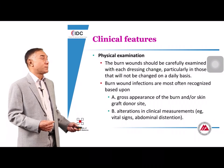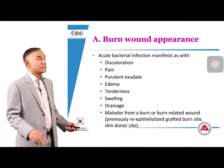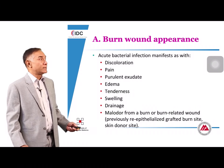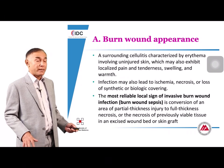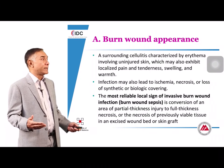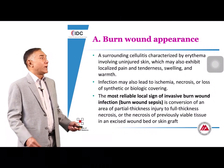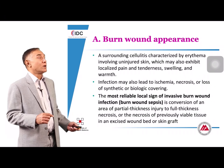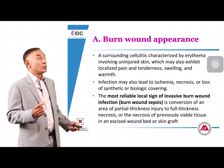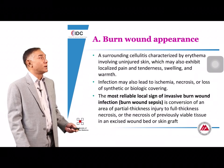Typical local features of burn wound infection include discoloration, pain, edema, tenderness, and malodorous discharge. Once infection spreads to surrounding normal tissue, cellulitis extends from the burn wound site. The most reliable local sign of burn wound infection is conversion of a partial-thickness area to full-thickness necrosis, indicating that necrosis is worsening and confirming burn wound infection.